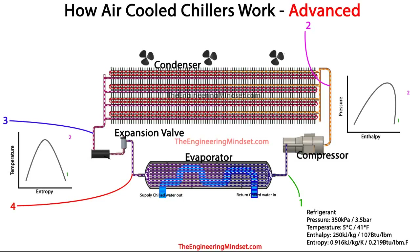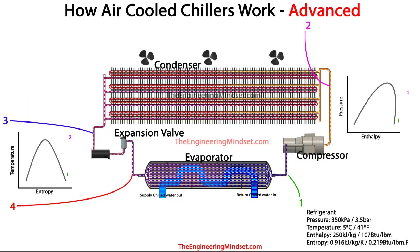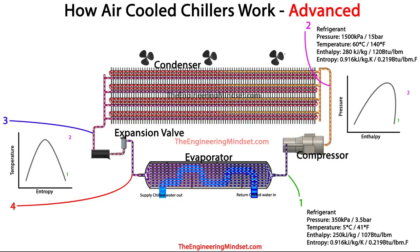At point two, we know the refrigerant is going to be a high pressure, high temperature, superheated vapor, so we mark point two up in the superheated region. The pressure is 1,500 kPa (15 bar), the temperature is 60°C (140°F), with an enthalpy of 280 kJ/kg (120 BTU/lb), and an entropy of 0.916 kJ/kg·K (0.219 BTU/lb·°F). Notice that the pressure and temperature have increased and the enthalpy has also increased, but the entropy has remained the same — because we're compressing the refrigerant here.